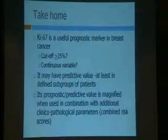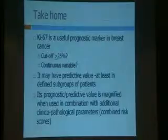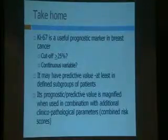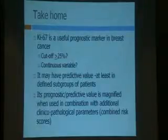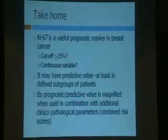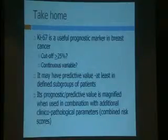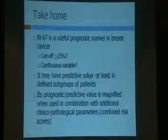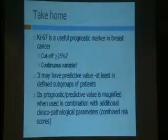My take-home message: there is no doubt that Ki-67 is a useful diagnostic marker in breast cancer. Perhaps the cut-off would be 25% in order to distinguish between luminal A and luminal B, best fitting the difference between luminal A and luminal B subtypes. But we should also try to learn how to use Ki-67 as a continuous variable.